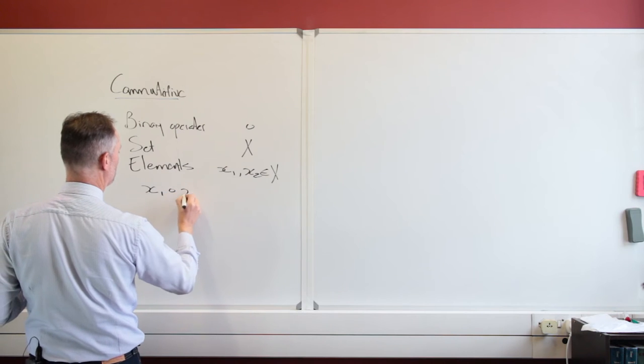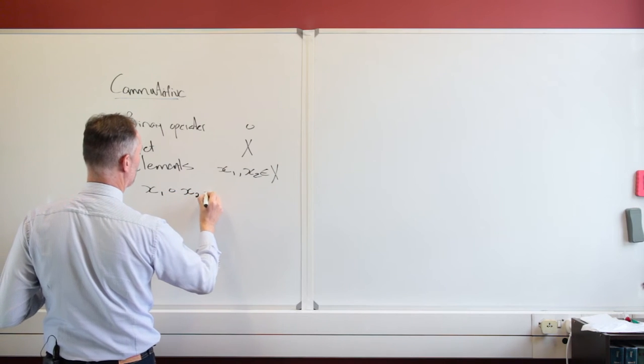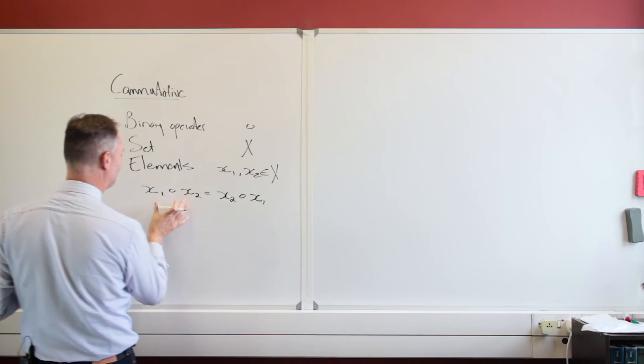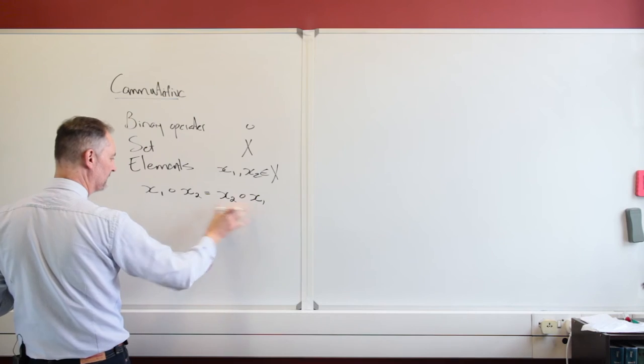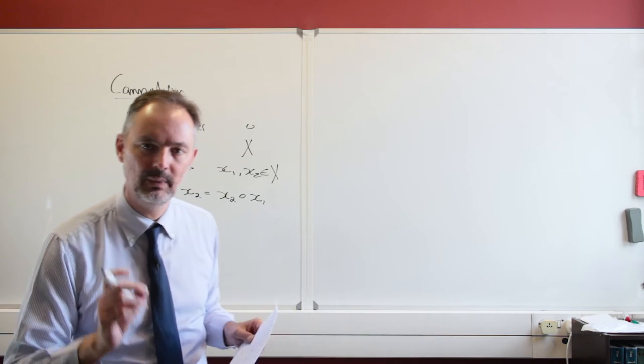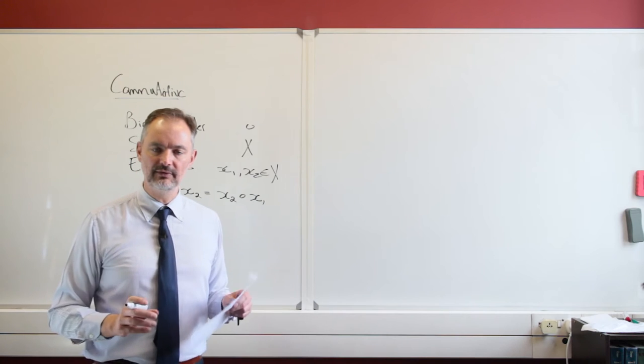a binary operation on X2, that equals X2 binary operation X1. If I did this operation and I did that, I would get exactly the same solution. That is our choice. That is how we define it. Once we've defined it,